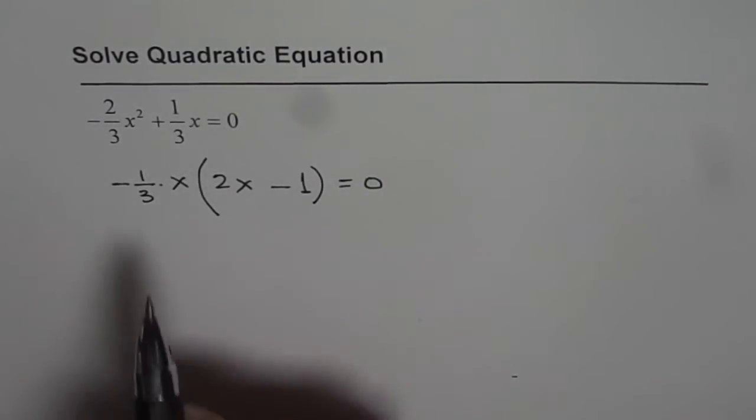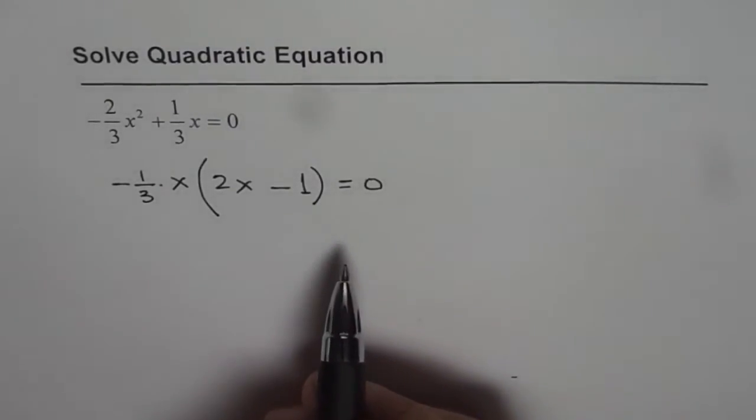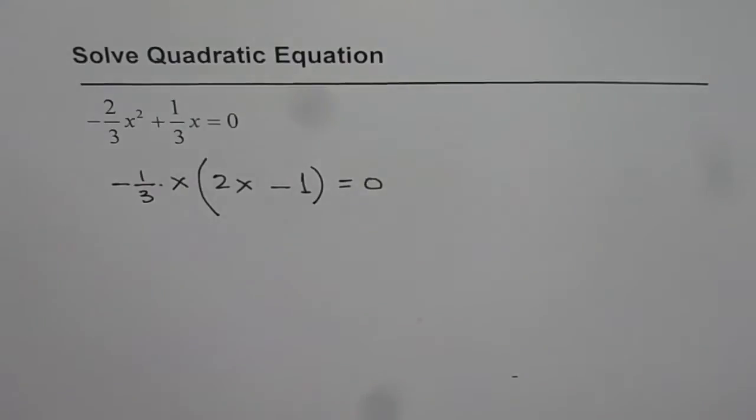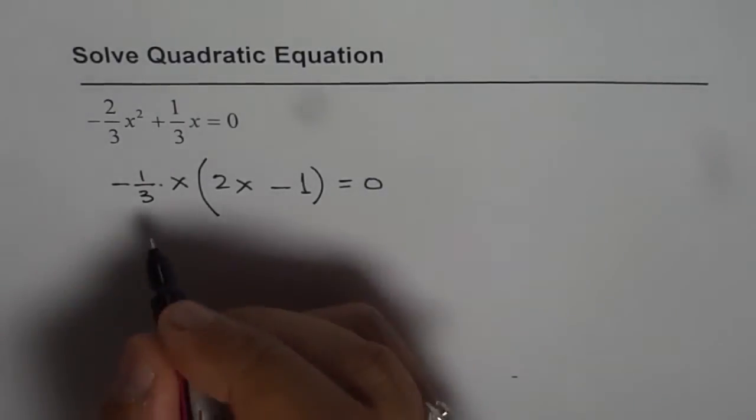Now once you have the factored form of a quadratic equation, now it is equal to 0. That means, now there are two solutions to this.